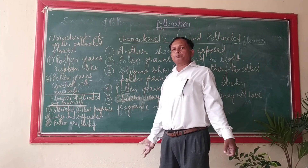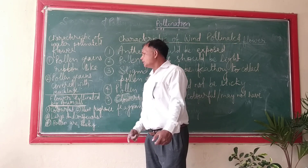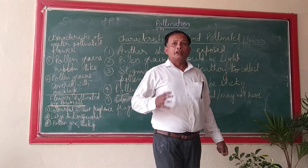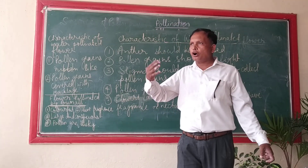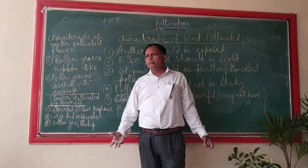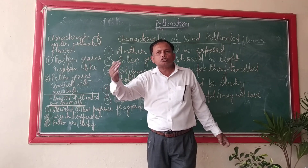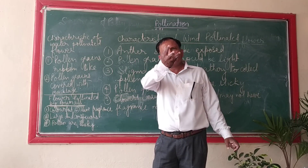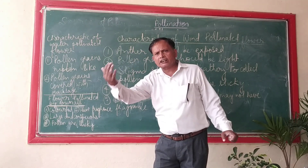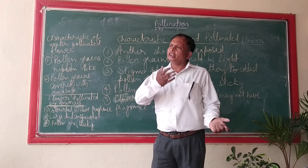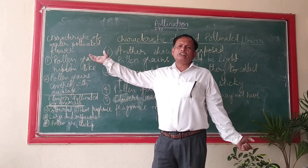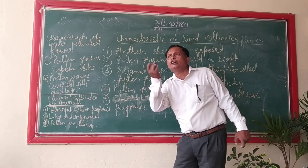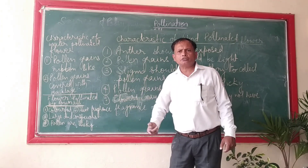Now we will study the characteristics of animal-pollinated flowers — flowers pollinated by biotic agents. Such flowers must be colorful, because animals are attracted only to colorful flowers. Their color attracts animals toward them, and when the animals visit, pollen grains are automatically transferred. So they must be colorful. Even if they are colorful but small, they are not visible.